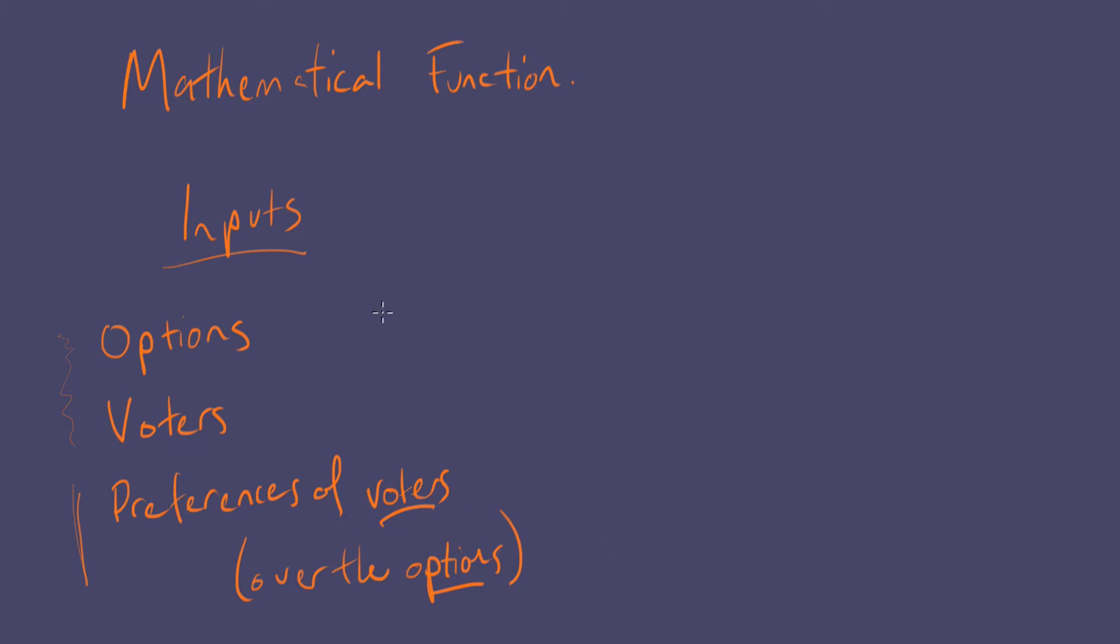Usually, I'll refer to the options with Roman letters like A, B and C. Some writers like to use X, Y and Z. The voters, it tends not to be terribly important to label them because it's rare that we actually want to label all of them, whereas you definitely usually do want to label all of the options that are being voted on. One thing is we'll usually assume that there is a total number of them, N.